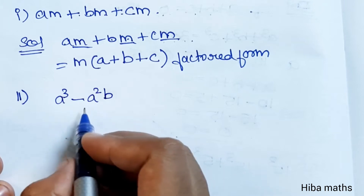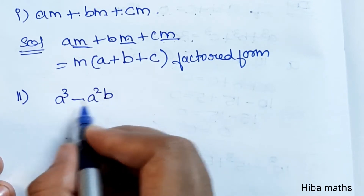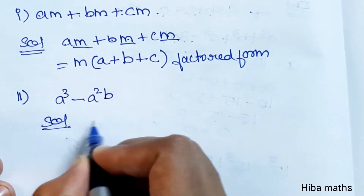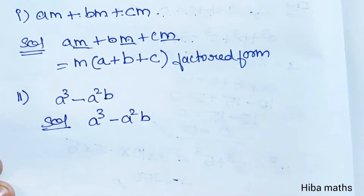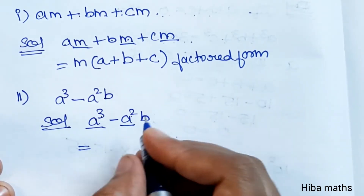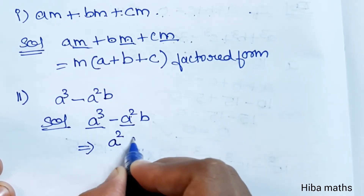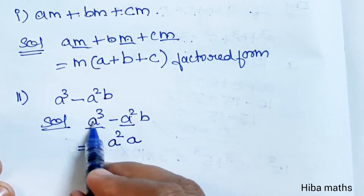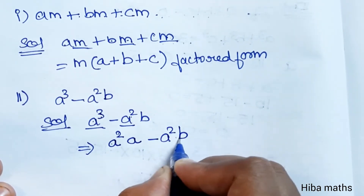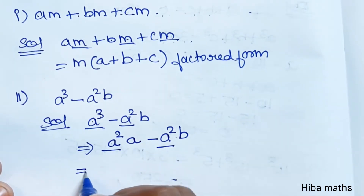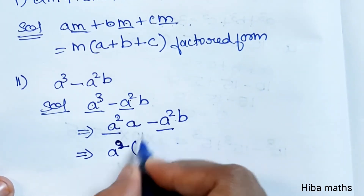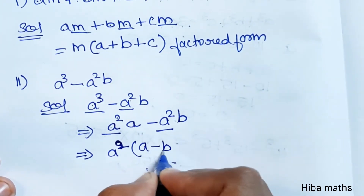Second subdivision: A cube minus A square into B. The common term is A. There is a cube and a square, so the common factor is A square. A square into A gives A cube. Then minus A square into B — A square is common. Remaining terms give A minus B. So the factored form is A square into bracket A minus B.